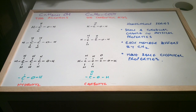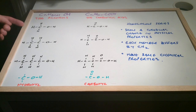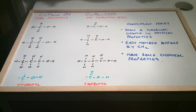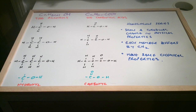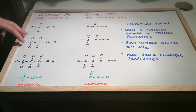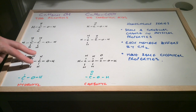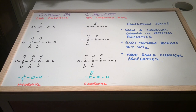Homologous series show a gradual change in physical properties, such as boiling point or solubility. Looking at the alcohols, the boiling points increase as the number of carbons increases — a gradual increase. Solubility similarly shows a gradual decrease along the series. Each member of a homologous series also differs by CH2, and you can see the carboxylic acids show exactly the same pattern.